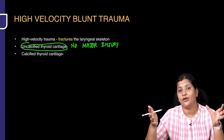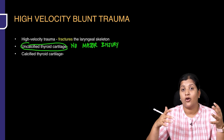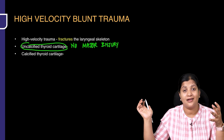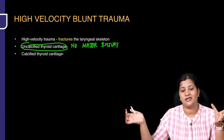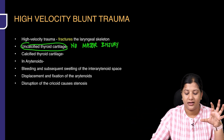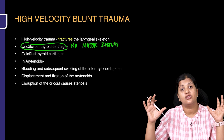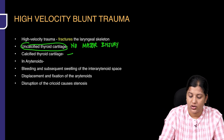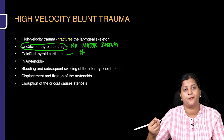With a calcified thyroid cartilage, there can be bleeding into the paraglottic space, Reinke's space, and the interarytenoid spaces. So with a calcified thyroid cartilage, you will see fractures.